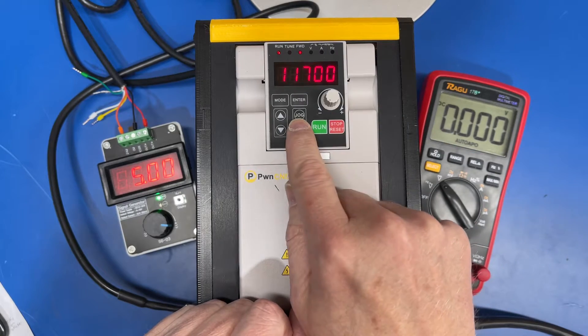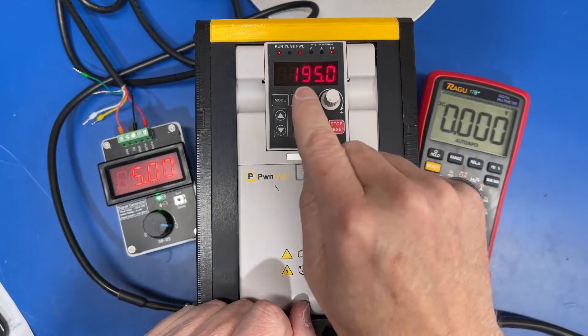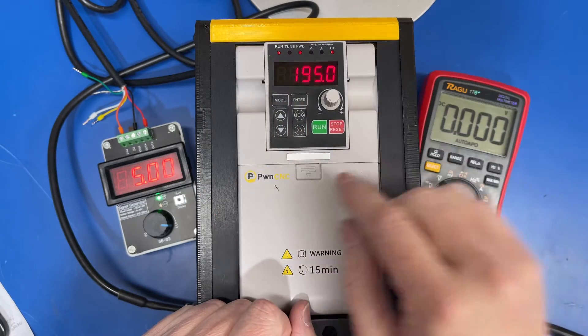You can hit this little double arrow button, that changes it to hertz. And then you can see from 0 to 400 hertz, we're roughly 200 hertz.